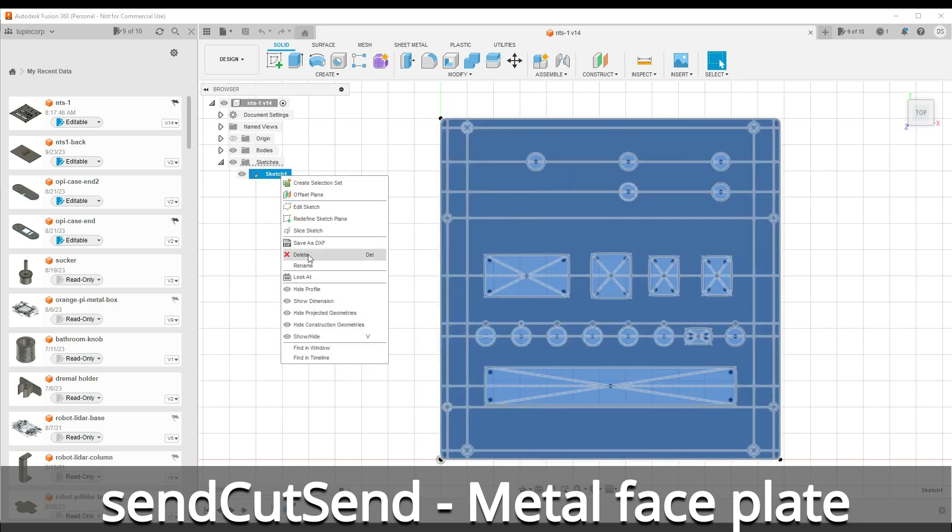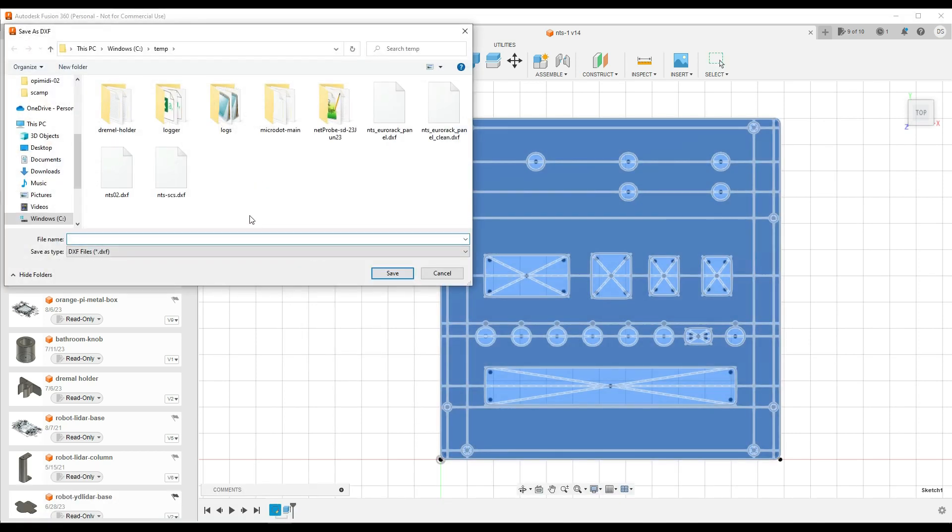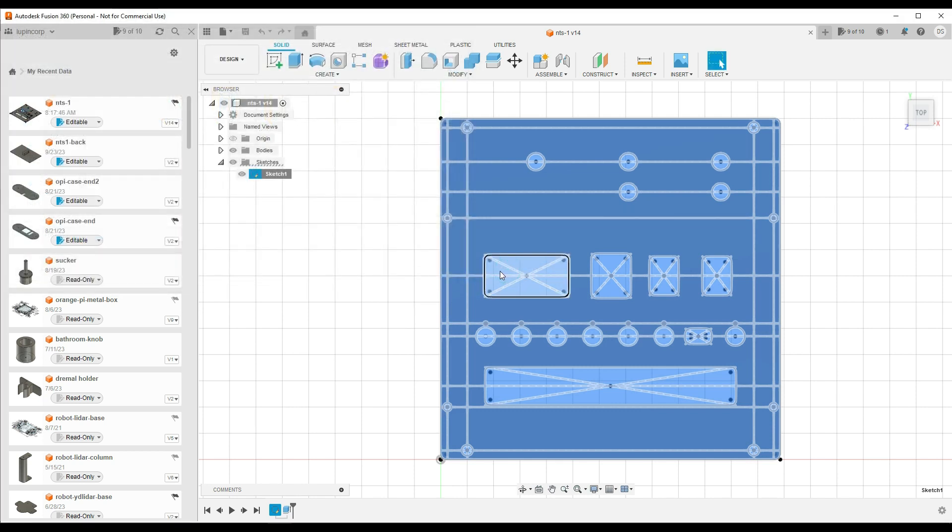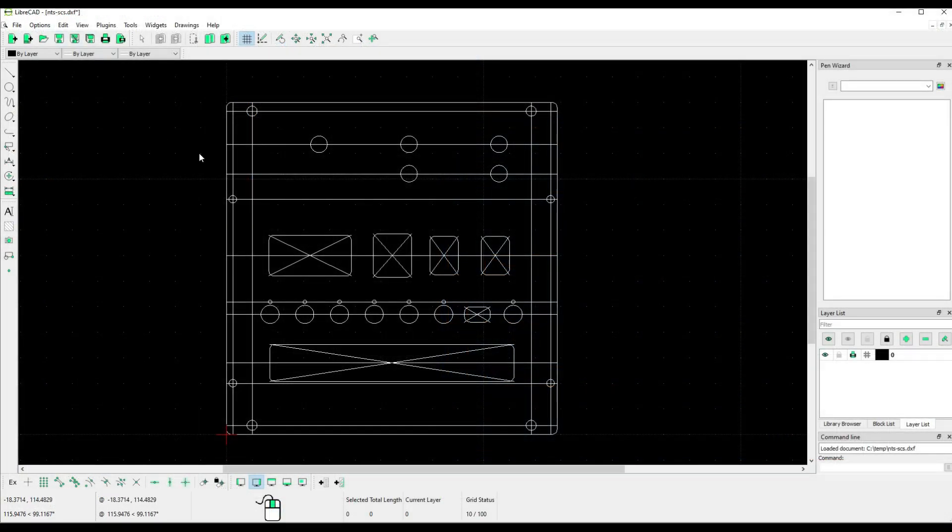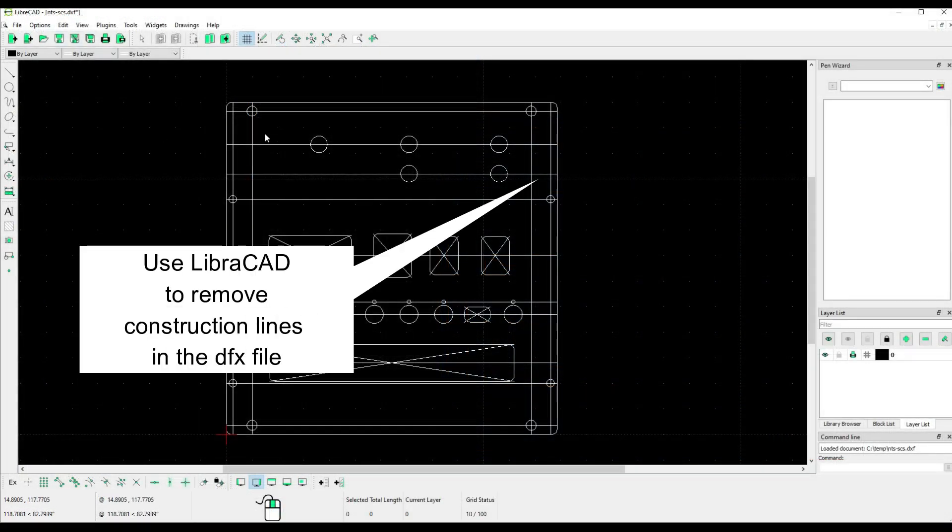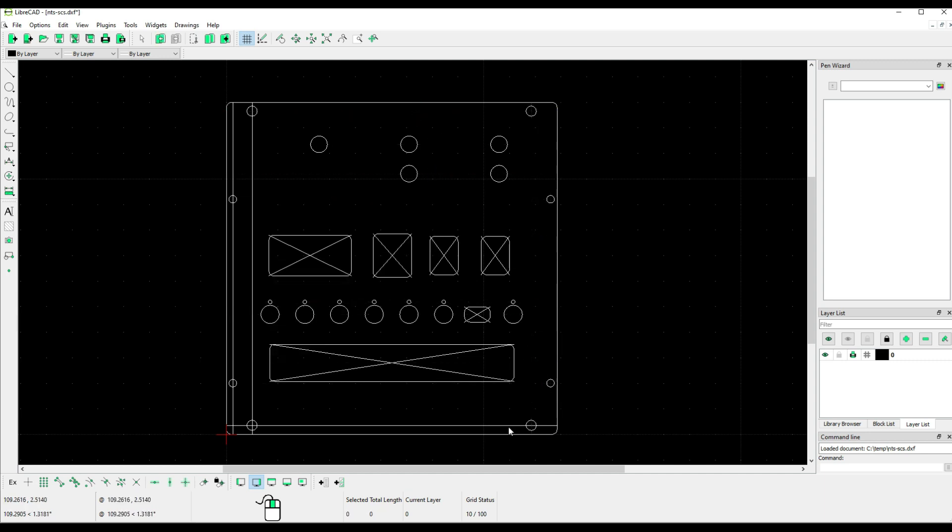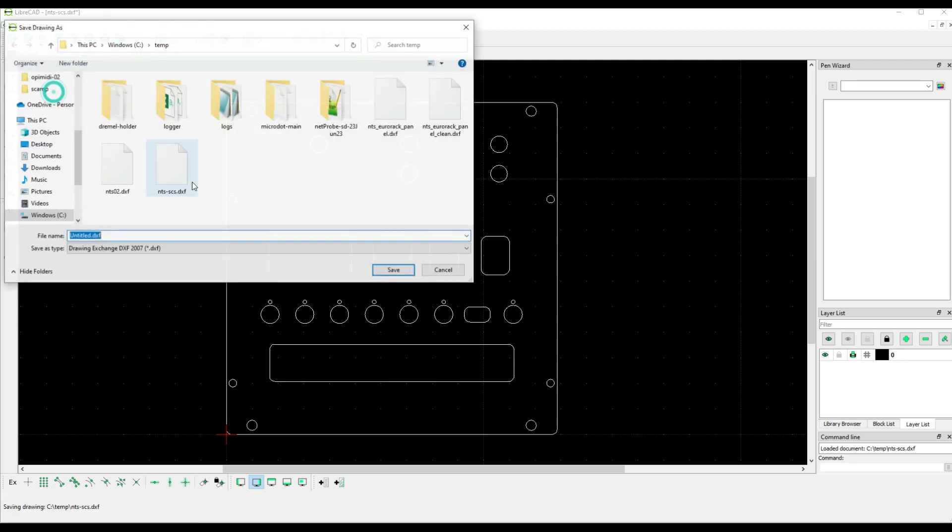Once I'd got a good layout for the 3D print version of the front panel, I saved it as a DXF file—that's what Send Cut Send uses. Before I sent it to them, I had to use a CAD program just to get rid of the construction lines I put in the DXF file. Send Cut Send doesn't seem to like dealing with those, so I saved that as an updated version of the DXF file.